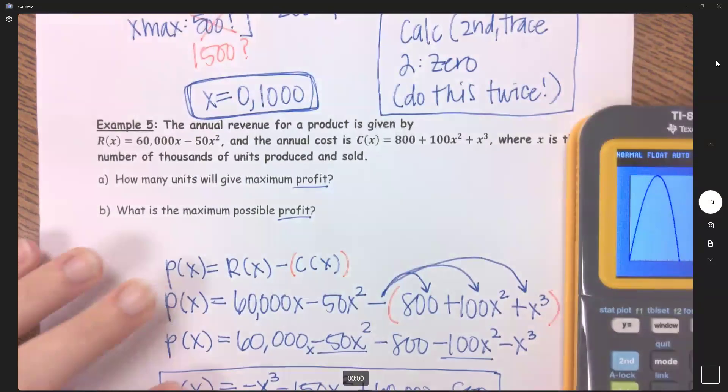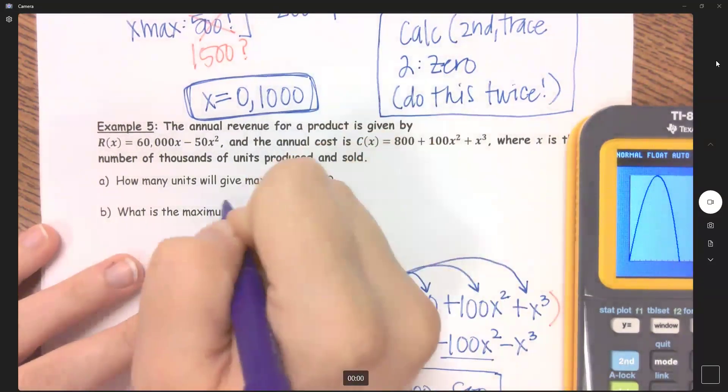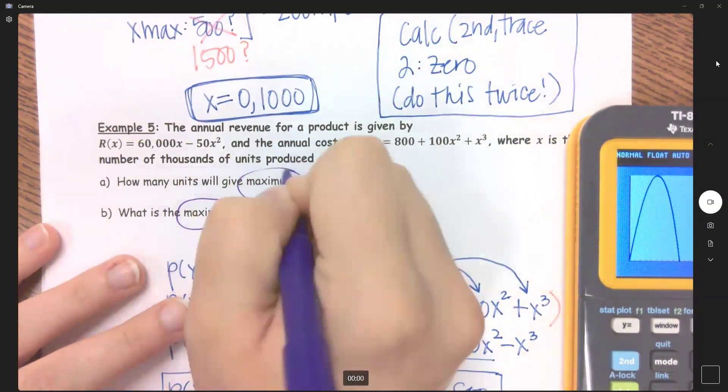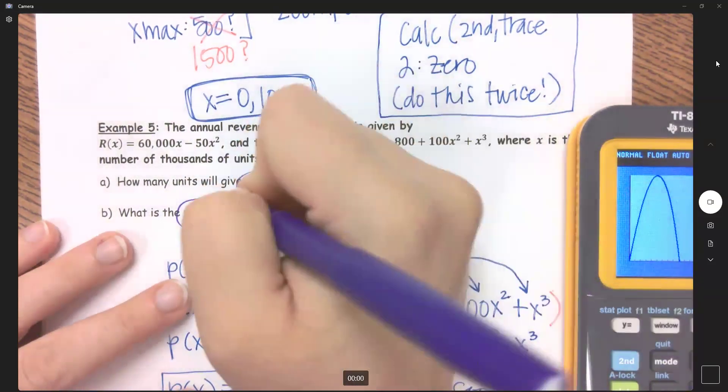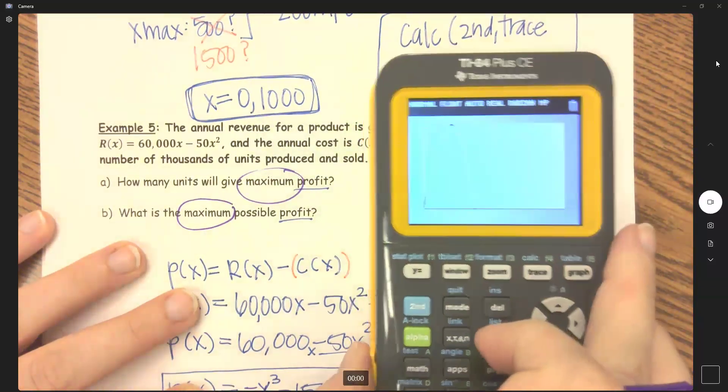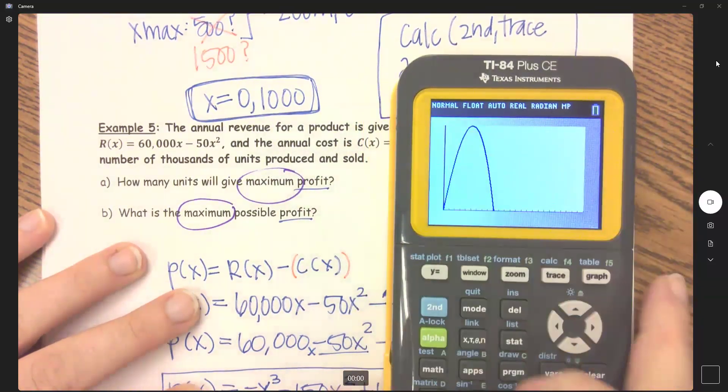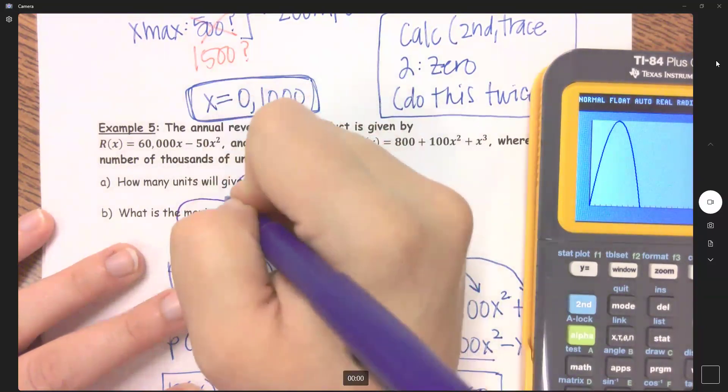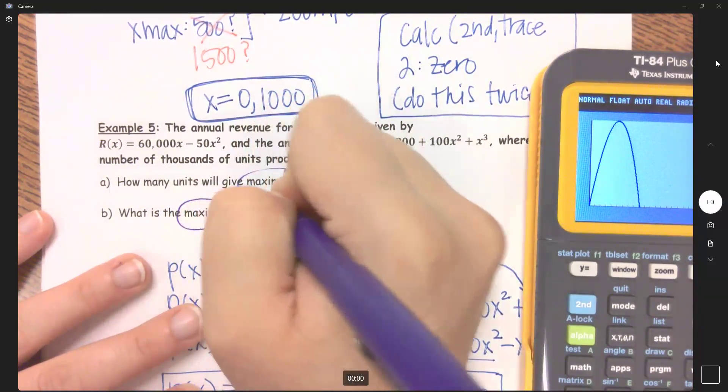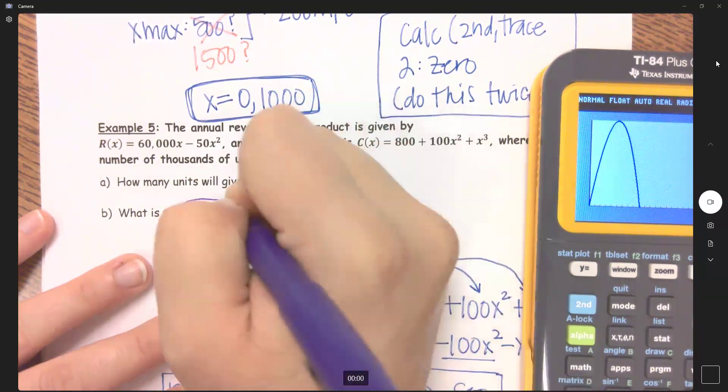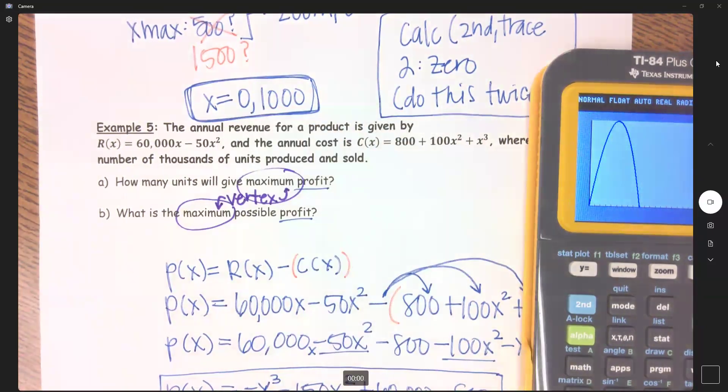So we had enough time to kind of think about that. This word here, maximum, is my key word. And if this is kind of what my graph looks like, this is my maximum point. What we are essentially asking for is the vertex.